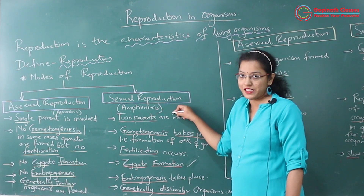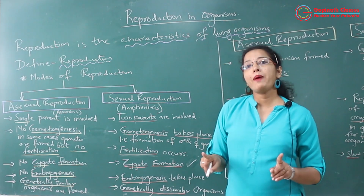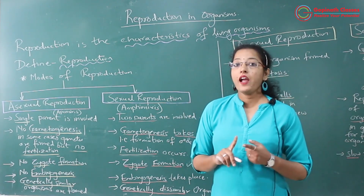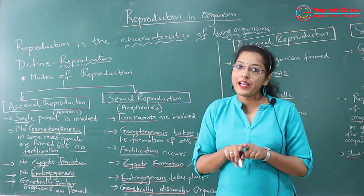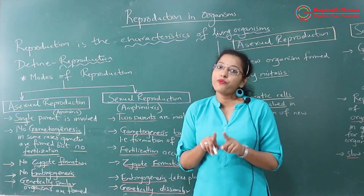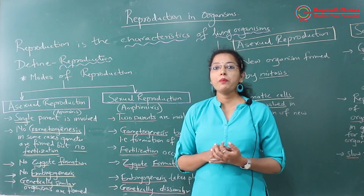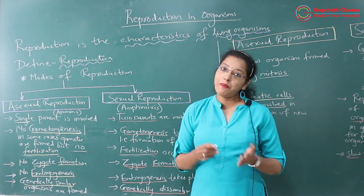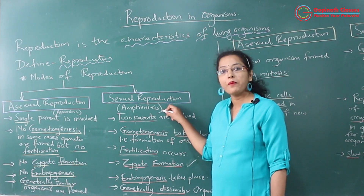Sexual reproduction is also known as amphomixis. Why is it known as amphomixis? Because two different parents are involved in sexual reproduction — one parent is the male parent and another is the female parent. As two different parents are involved, their genetic component is different, so whatever new organism is formed will be variant, or different from the parent. That is why sexual reproduction is also known as amphomixis.